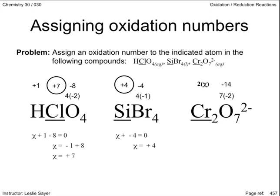But since it's a polyatomic ion with a net charge of negative 2, then when we add the oxidation number of the chromium atoms to the oxygen atoms, we should get negative 2. After some tinkering with a simple equation, we find the oxidation number for each chromium atom is positive 6.